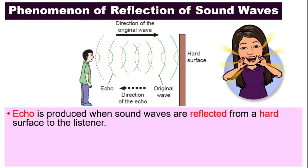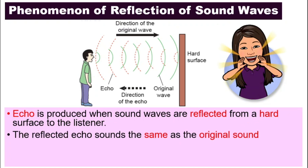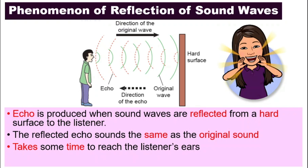What is echo? Echo is produced when sound waves are reflected from a hard surface to the listener. Remember in our first video in this chapter, we talked about the characteristics of sound waves. We said that sound waves can be reflected, and a good sound reflector will be a hard and smooth surface. The echo that we hear — the reflected sound — is the same as the original sound.